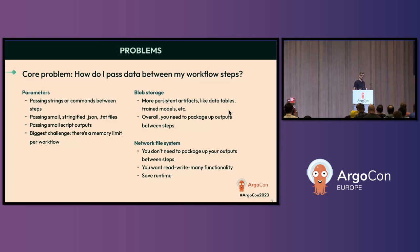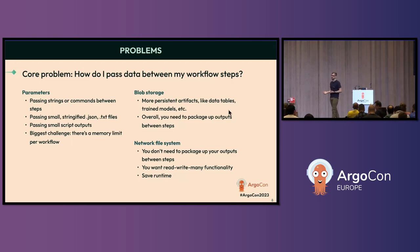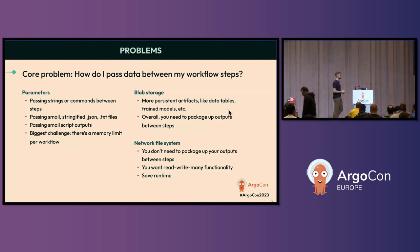On the blob storage side, you're getting more persistent artifacts — a good fit for data processing, especially for versioning and trained models in the ML space. You have to remember you're packaging data between steps, so you'll lose a little speed, but you might save some money from the archiving benefits. With network file systems, the big benefit is read-write-many compatibility. If you'll be running a lot of concurrent workflows or have a step processing many files at once, you will save some runtime.